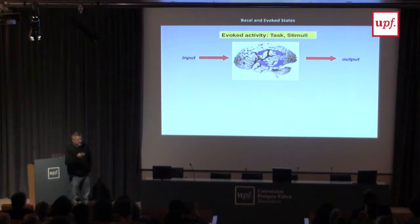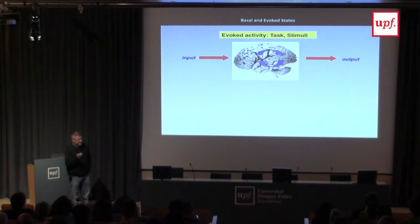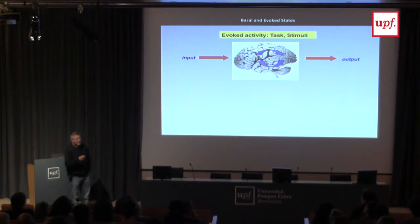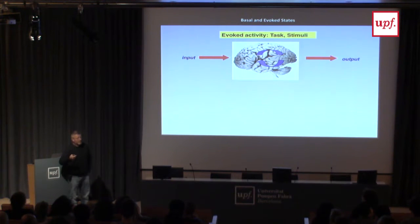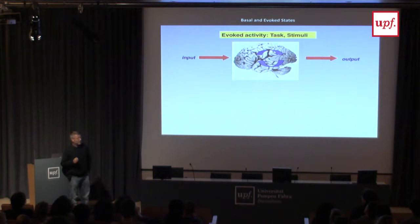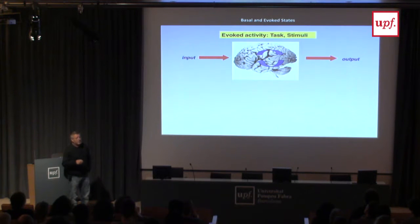In order to identify the system — what computation and dynamics it's processing — we excite it with a whole battery of different inputs: external stimulations and tasks. For example, visual stimulation, auditory stimulation, tactile stimulation, or more complex tasks like working memory, decision making, emotional evaluation. By studying the relationship between input and output, we can infer aspects of the process.